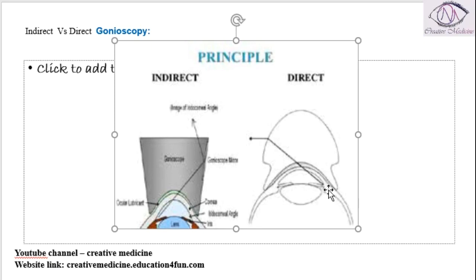So this is the lens. This is the angle of the anterior chamber. This is the Gonioscope which contains the lens, and this is the angle of the anterior chamber. From this edge, you will directly see the angle of the anterior chamber.